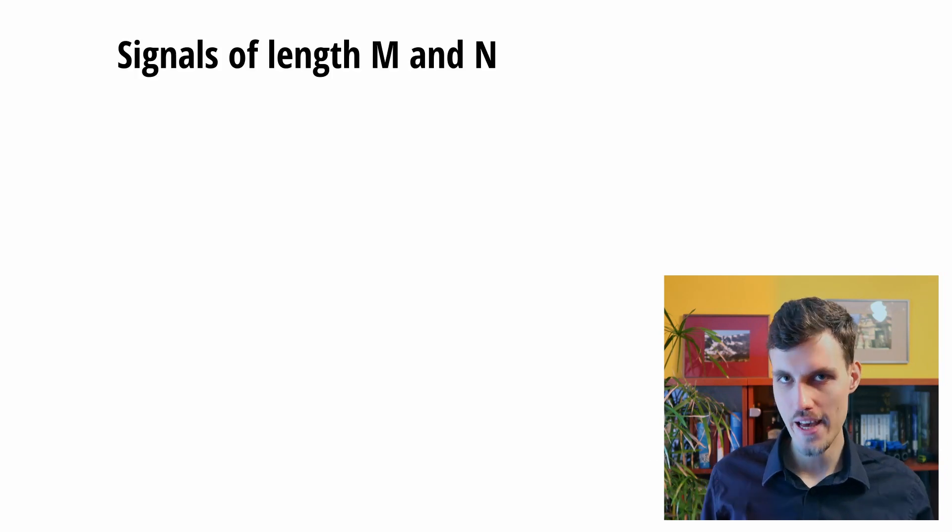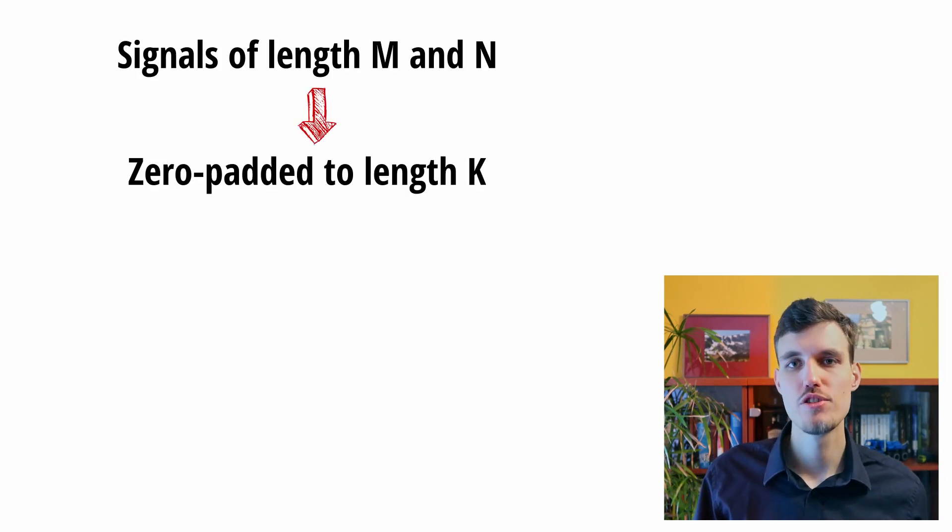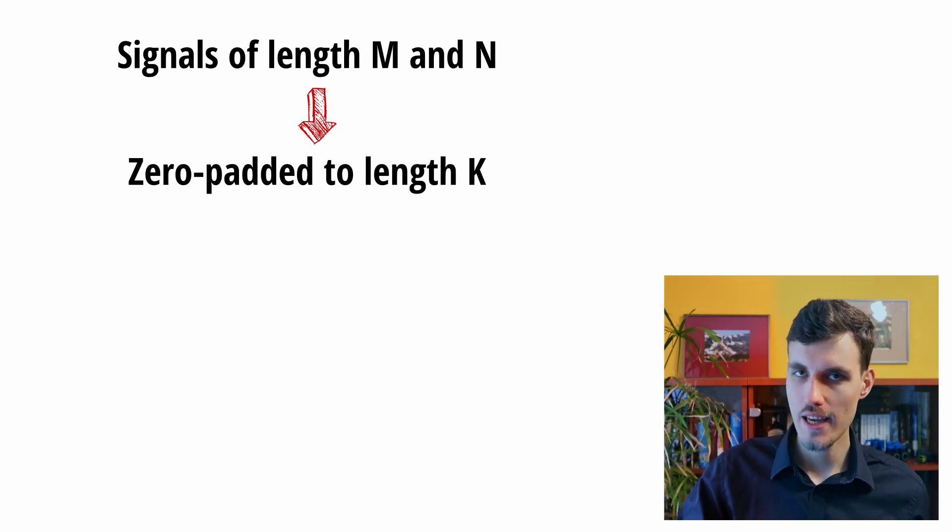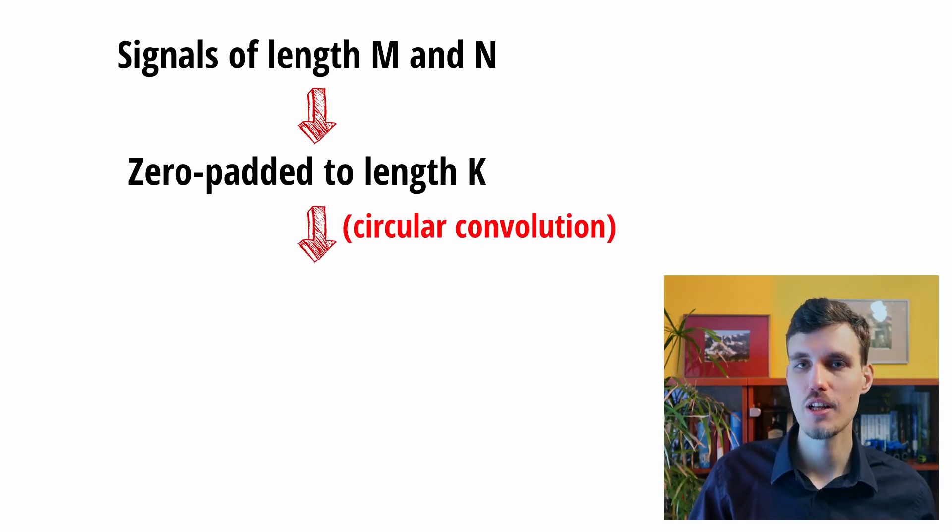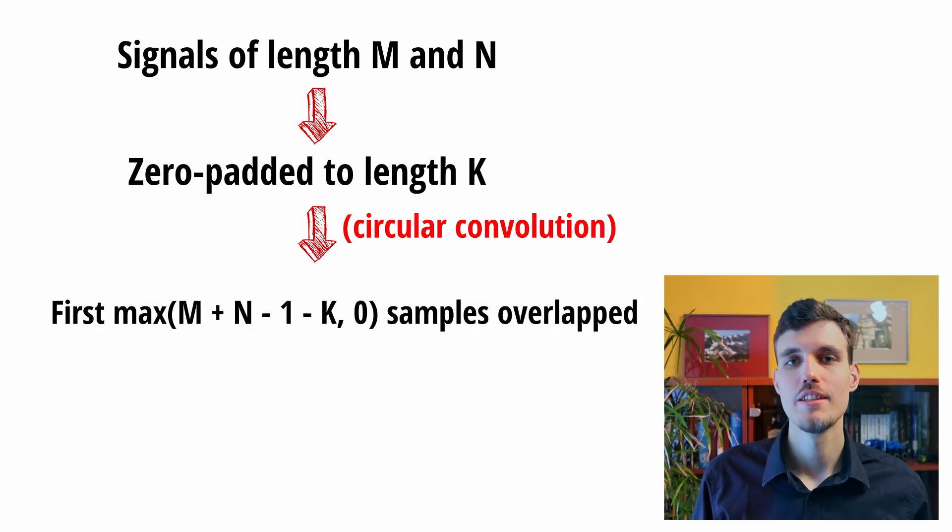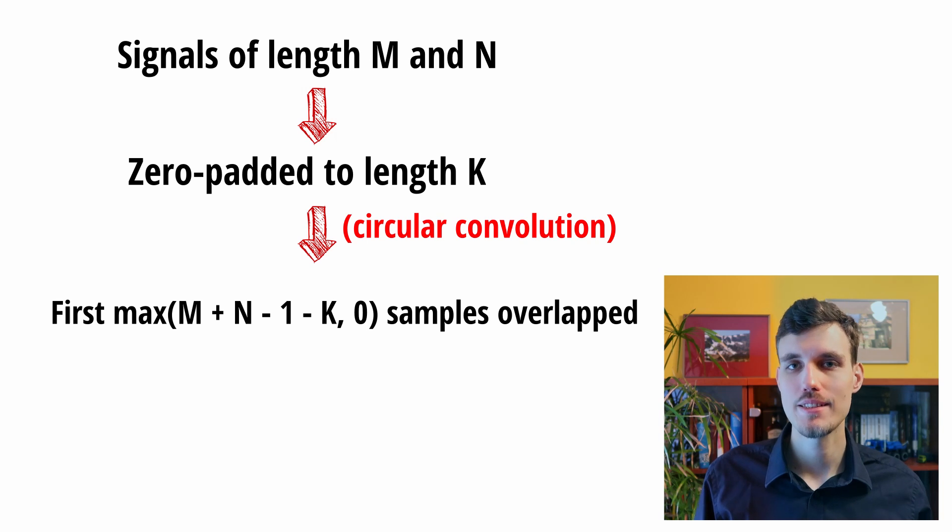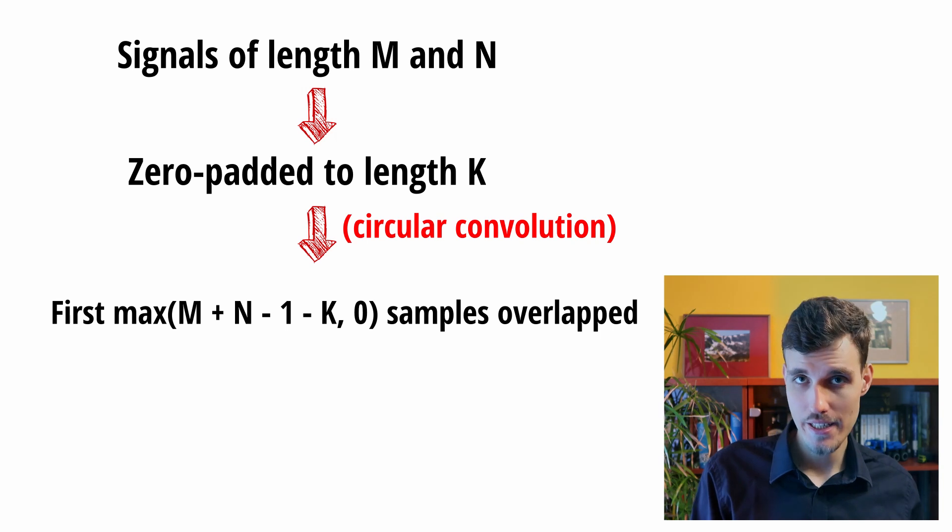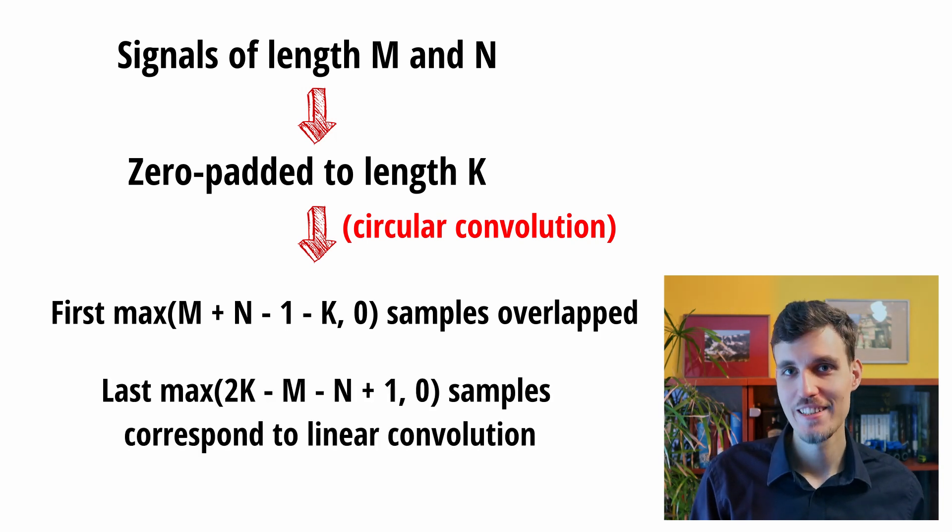In the general case, if we have signals of length M and N and pad them with zeros to the length K and then perform the circular convolution, we need to discard the first M plus N minus 1 minus K samples. The remaining 2K minus M minus N plus 1 samples are valid samples of the linear convolution or zeros.